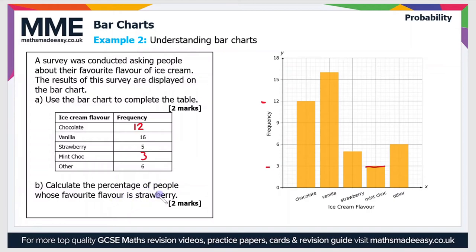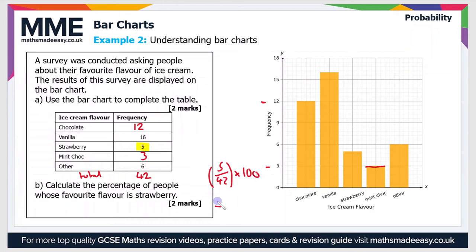The next part asks us to calculate the percentage of people whose favourite flavour is strawberry. The frequency for the strawberry category is 5. We need the total frequency across all categories. Adding 12, 16, 5, 3, and 6 gives a total of 42. So as a percentage, we do 5 divided by 42 times 100, which gives us 11.9% to one decimal place — you could round that up to 12% if you wanted to.